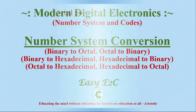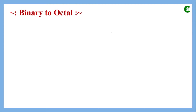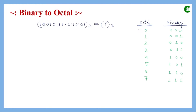The first conversion is from binary to octal — neither of these is the decimal number system. Before solving our example, we will see the relationship between binary and octal. In the octal number system we have eight digits from zero to seven. Since 8 equals 2 to the power of 3, where 2 is the base of binary and 3 is the power, representing any octal digit in binary requires three bits.